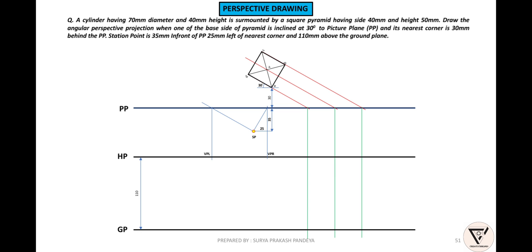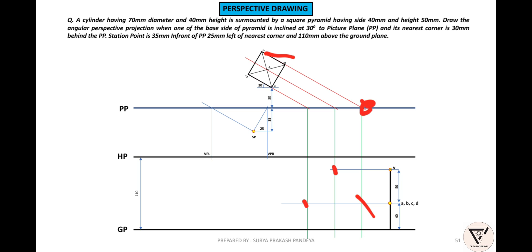Measure here: 40mm height for the cylinder, 50mm height for the pyramid. Points A, B, C, D are marked. A and D have a point; B and C have a point. A and D form a line, then this line is A-D.